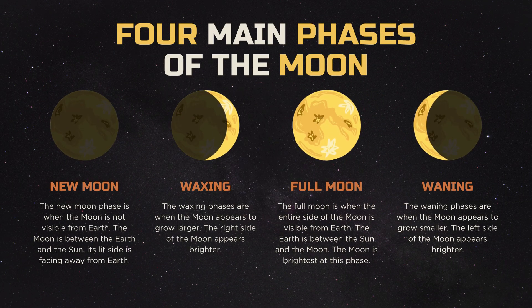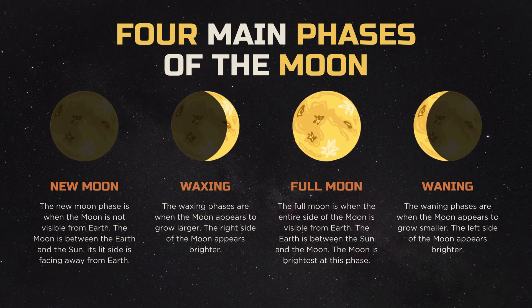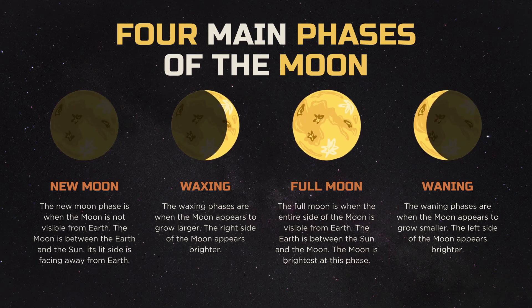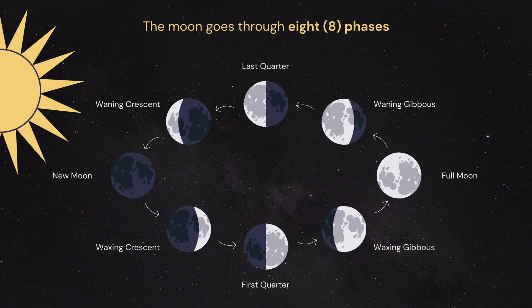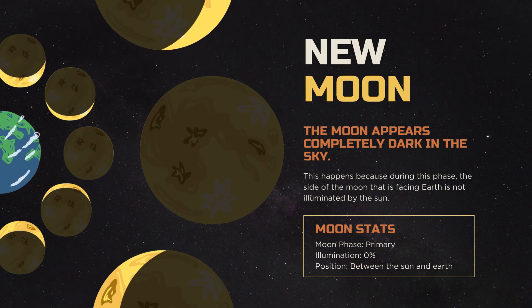We're familiar with the four main phases of the Moon cycle: New Moon, Full Moon, First Quarter, and Last Quarter. However, these broad phases can be further subdivided into eight distinct stages to provide a more detailed picture of the Moon's ever-changing illumination. We begin with the New Moon.